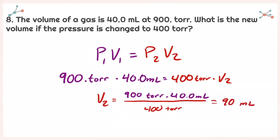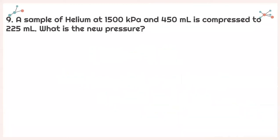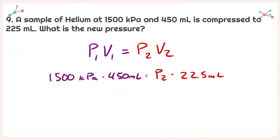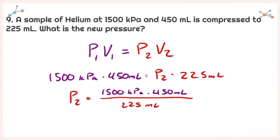For number 9, a sample of helium at 1,500 kilopascals and 450 milliliters is compressed to 225 milliliters. What is the new pressure? Writing down P1 times V1 equals P2 times V2 and plugging in everything given — I need to solve for P2. Isolating P2: 1,500 kilopascals times 450 milliliters divided by 225 milliliters. Plugging into my calculator, I get a final pressure of 3,000 kilopascals.